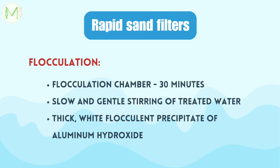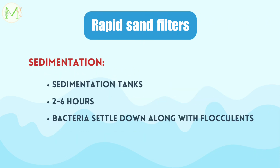The flocculation phase involves slow and gentle stirring of the treated water in a flocculation chamber for about 30 minutes. This results in the formation of a thick, copious, white flocculent precipitate of aluminum hydroxide. In sedimentation, the coagulated water is directed into sedimentation tanks where it is kept for 2 to 6 hours, allowing the flocculent precipitate together with impurities and bacteria to settle down in the tank.